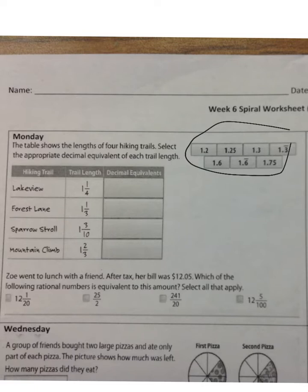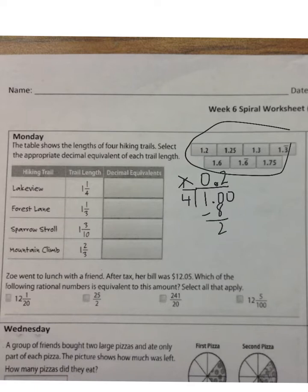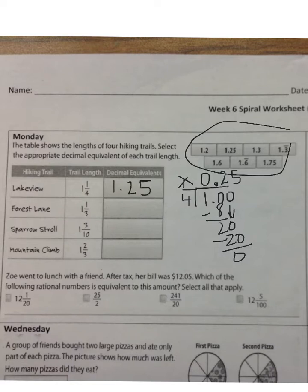To change one-fourth into a decimal, divide the numerator by the denominator, add a decimal and two zeros, bring the decimal up, and divide until it terminates or repeats. Four can't go into one, but it goes into ten twice — that's eight with two left over. Bring down the zero and four goes into twenty five times, that's twenty with nothing left over. So Lake View would be one and twenty-five hundredths.